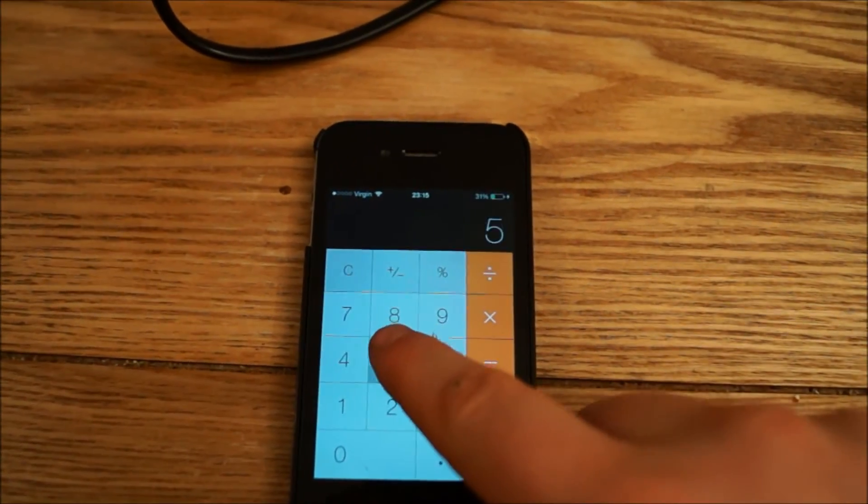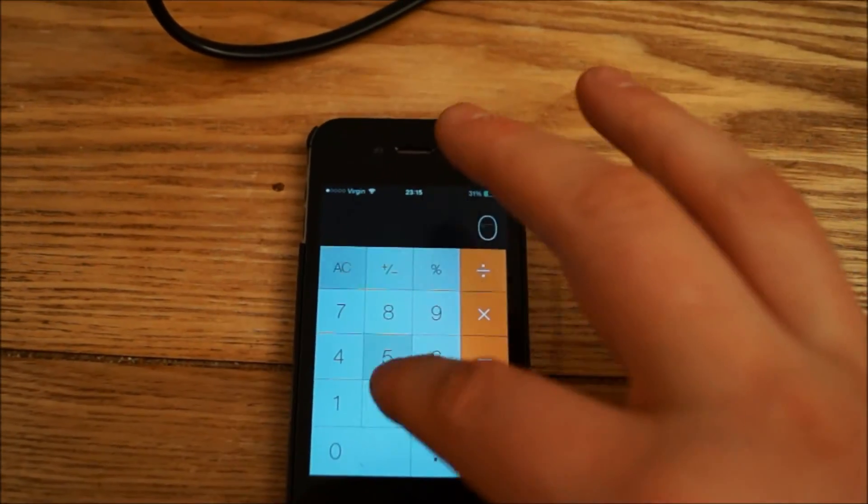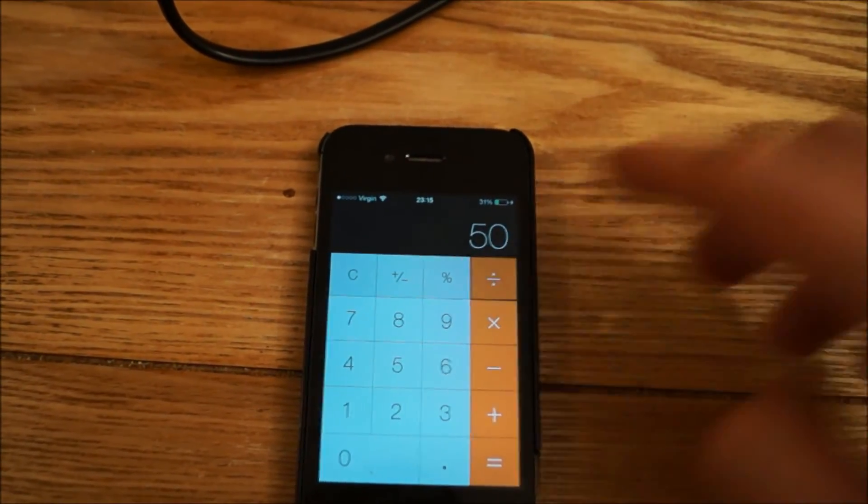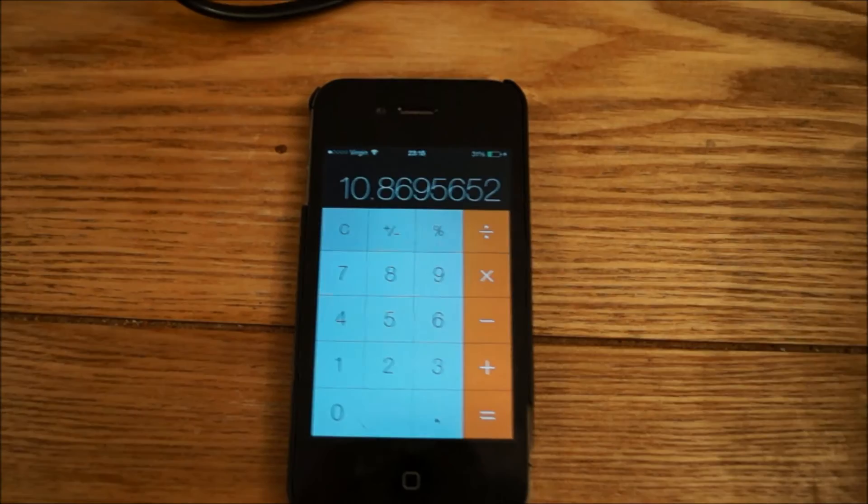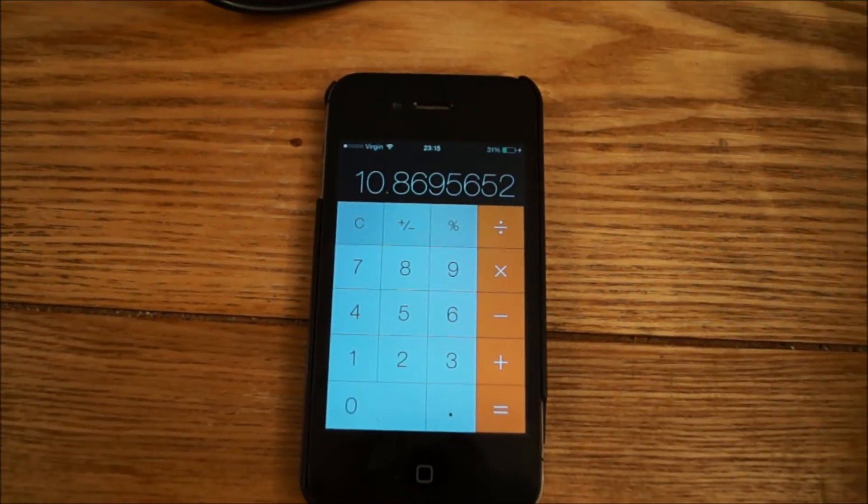So we start off with the 50 amps. And we need to divide by 4.6. And that's going to show us how many hours we can run the television for constantly.